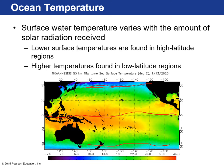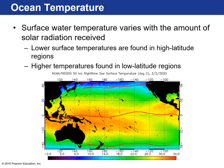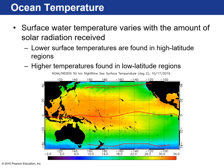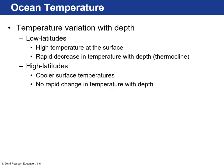The reason is that low-latitude areas like the equator receive more solar radiation, so the ocean water heats up as a result. At high latitudes, less solar radiation is received and therefore the ocean doesn't get as warm.